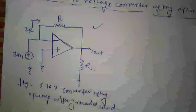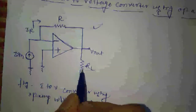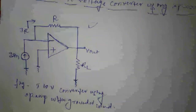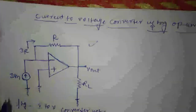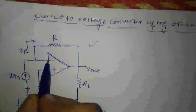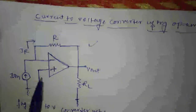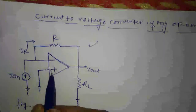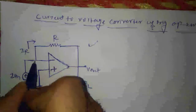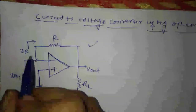Look at this circuit — here is the circuit for conversion of current to voltage using op-amp with grounded load. You can easily see that the positive terminal of the op-amp is grounded, and the input is given to the negative terminal, so this is an inverting type of op-amp configuration.